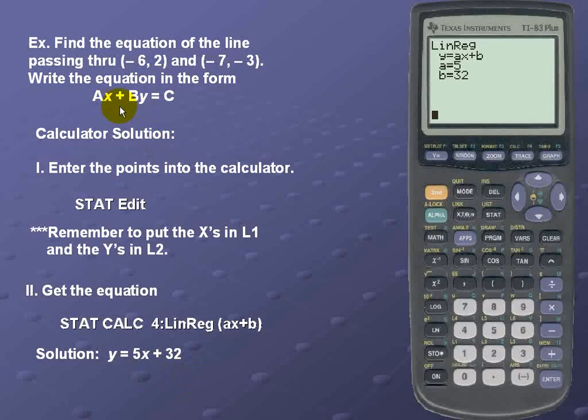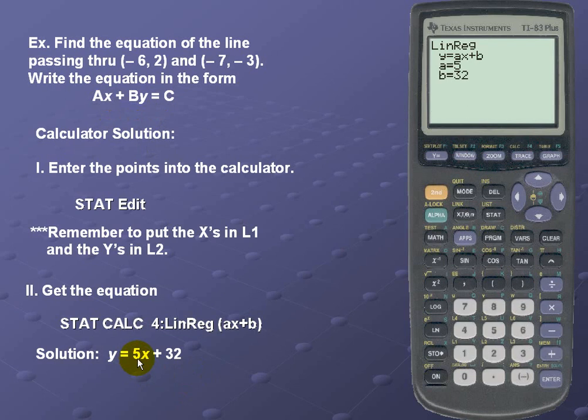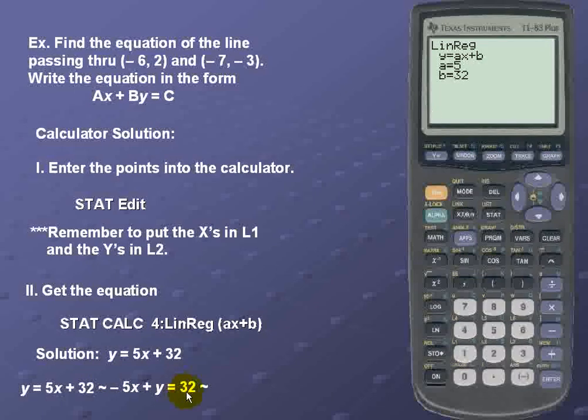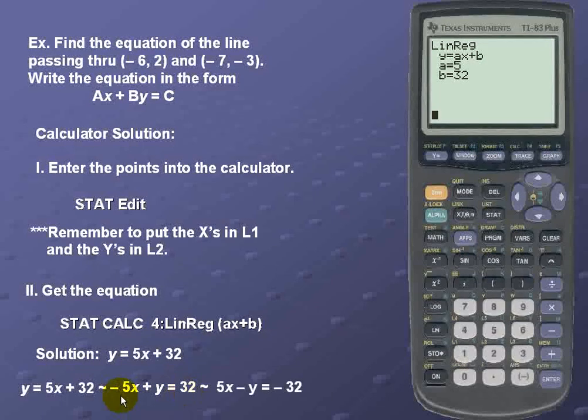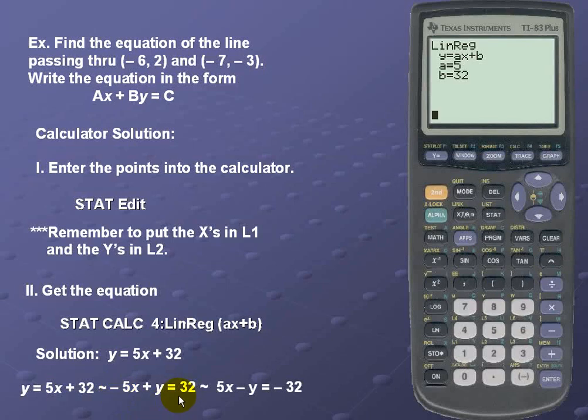Remember our question asks for the final answer in standard form. So what we should do here is subtract 5x from both sides. And once we subtract 5x from both sides, we have -5x + y = 32. We next multiply both sides of our equation by -1, which results in a final equation of 5x - y = -32.